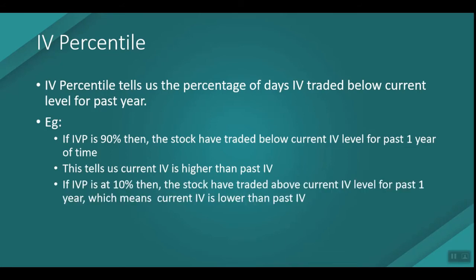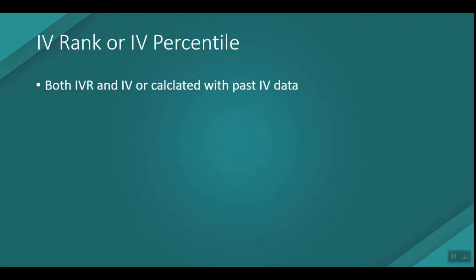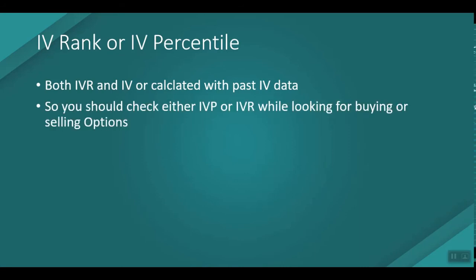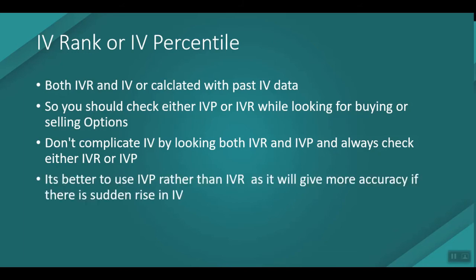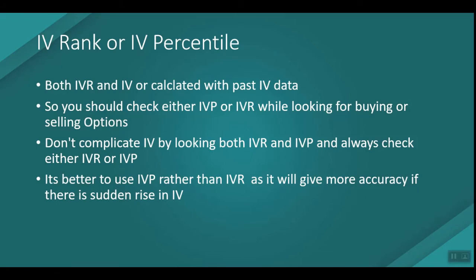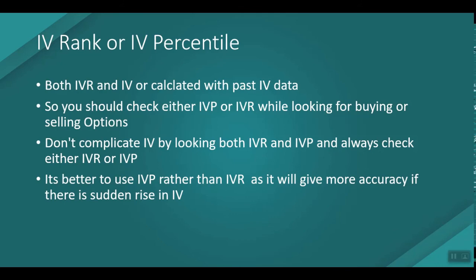Both IV Rank and IV Percentile are calculated using past IV data. You should check either IV Percentile or IV Rank when looking to buy or sell options — don't complicate it by looking at both simultaneously. It is better to use IV Percentile rather than IV Rank, as it gives more accuracy when there is a sudden rise in IV due to some news event.